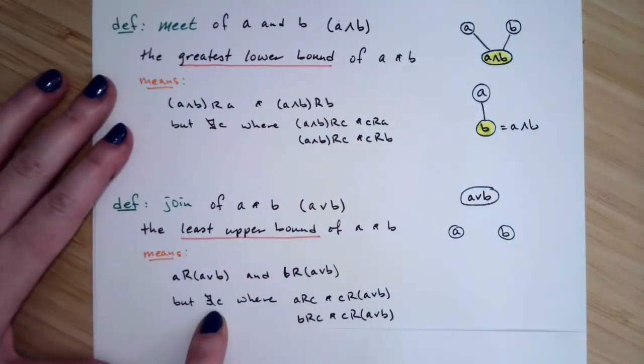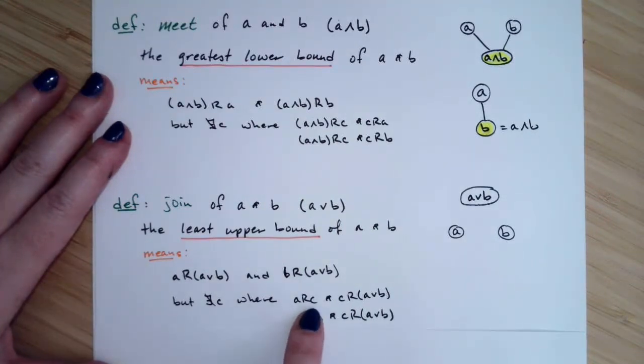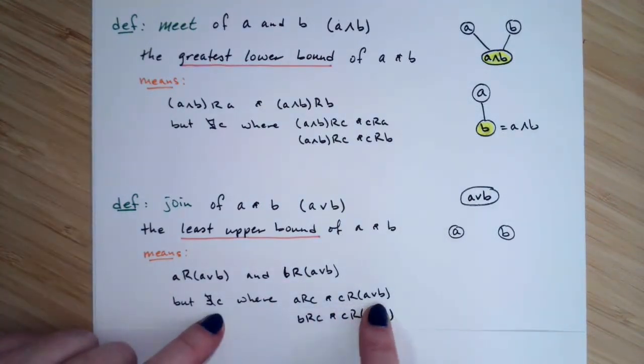And you don't have any other element in the Hasse diagram or in the relation where A is related to that other element, C, and then C is related onto the join, and also B is related to that same other element, C, and then C is related onto the join. In other words,